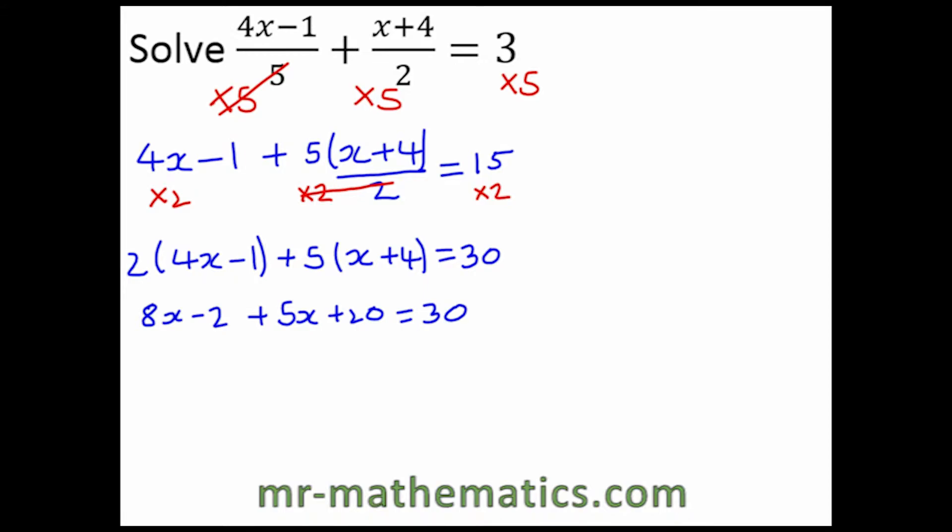The next thing we're going to do is collect the like terms. So 8x plus 5x is 13x. Negative 2 plus the 20 makes plus 18, and that equals 30. So now we can take away the 18 from both sides. So 13x equals 12.